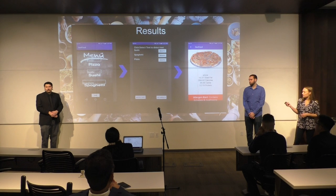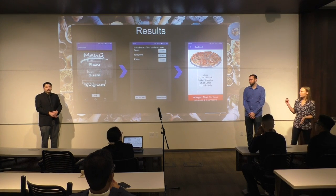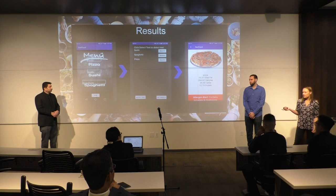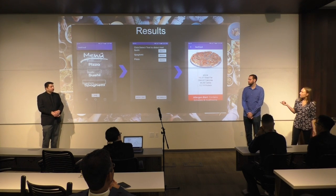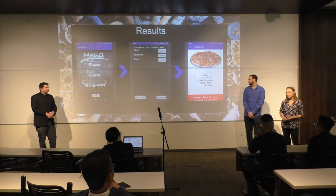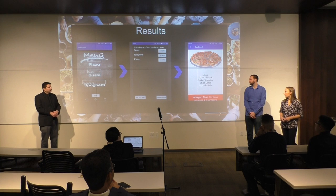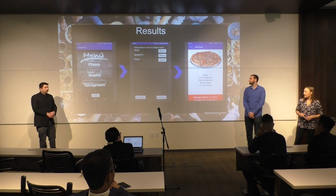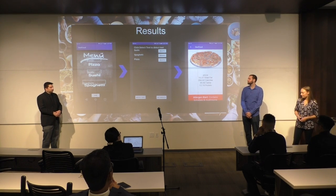From the next screen, you'll be able to confirm or deny whether that is indeed what you want to look up, and be able to press 'Get Results.' This is our final screen, showing an image of the dish, nutrition facts, along with allergens at the bottom.